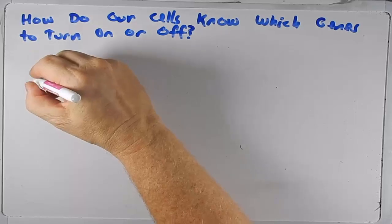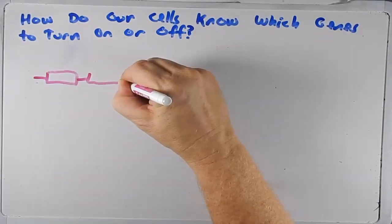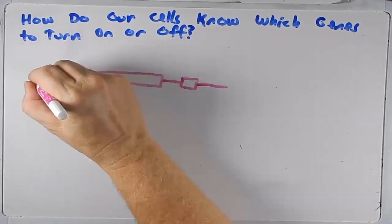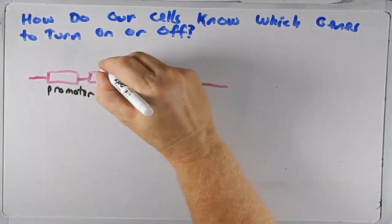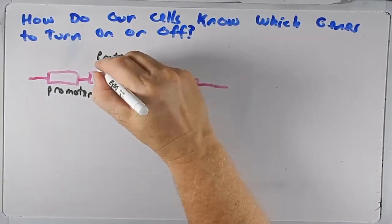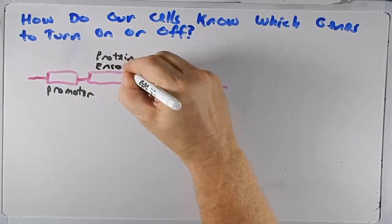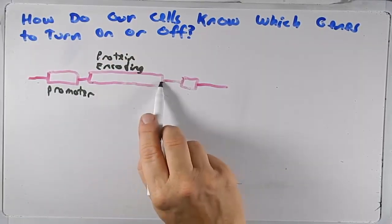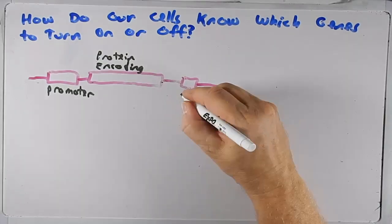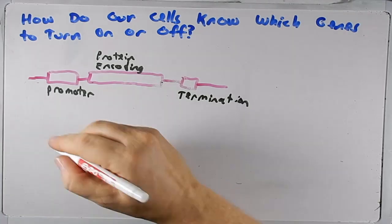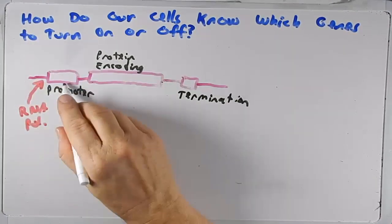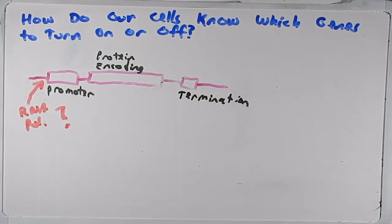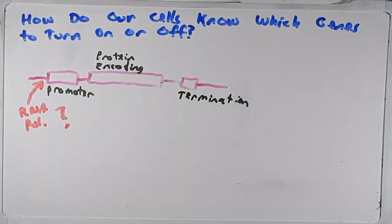I'm going to draw a typical gene. Remember the gene has many parts: we have a promoter, we have the protein-encoding portion — the part that starts with the start codon and ends with the stop codon — and then we have the termination sequence. The key question is: when RNA polymerase comes along, how does it know to bind to the promoter or not bind to the promoter?